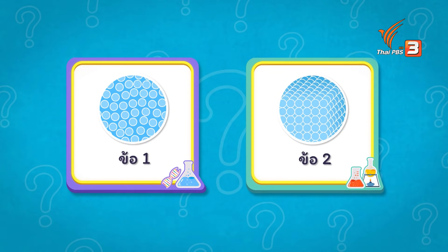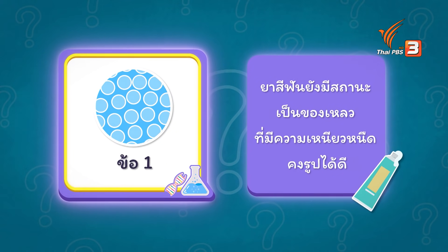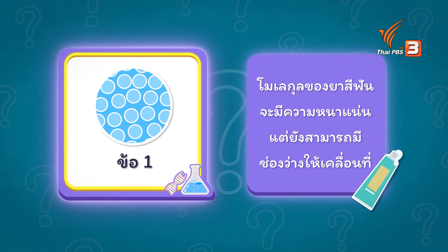คำตอบข้อที่ 1 (Answer number 1): เพราะยาสีฟันยังมีสถานะเป็นของเหลว ถึงแม้ว่าจะมีความเหนียวหนืดคงรูปได้ดีในระดับหนึ่ง (Because toothpaste is still in a liquid state, even though it has good viscosity that holds its shape to a certain degree.) This makes the molecular shape of toothpaste dense, but not tightly packed — there is still space to allow movement.